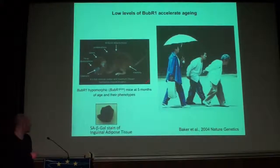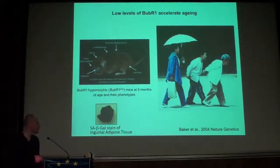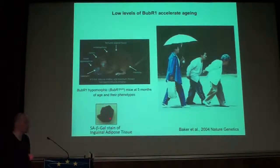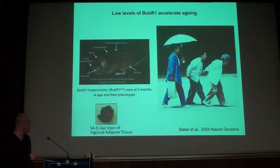When we do a senescent stain on inguinal adipose tissue of these mice, we can clearly see that senescence is associated with the beta-galactosidase stain. These IAT deposits are highly positive.